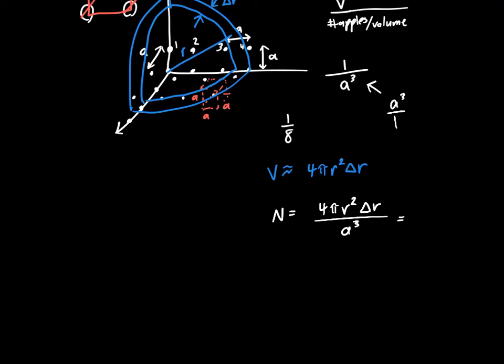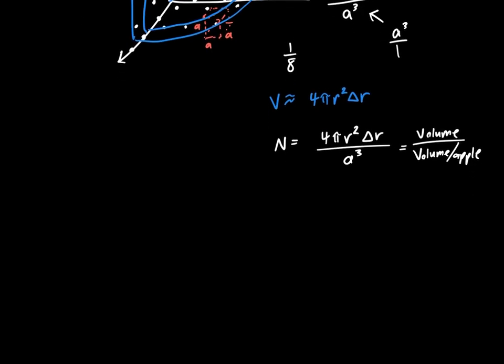And that's just from a simple units analysis is volume divided by volume per apple. And that's just where the a cubed comes from. So the one over a cubed. And so that gives us the total number of apples within a certain volume.